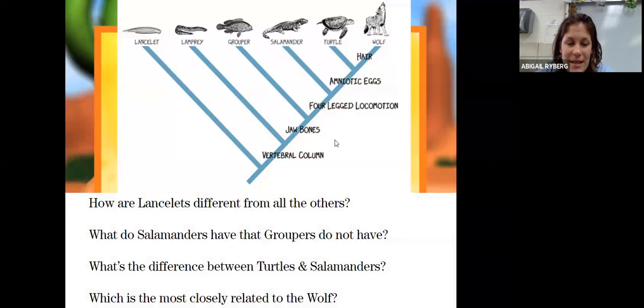Here's that same cladogram. How are lancelets different from all the others? Lancelets don't have a vertebral column. What do salamanders have that groupers do not? Salamanders have four-legged locomotion and groupers do not.